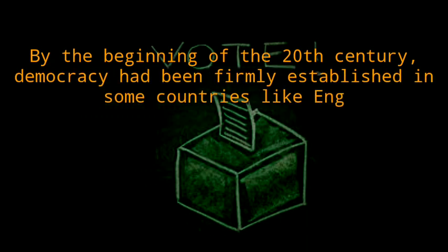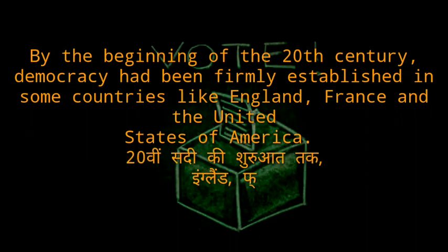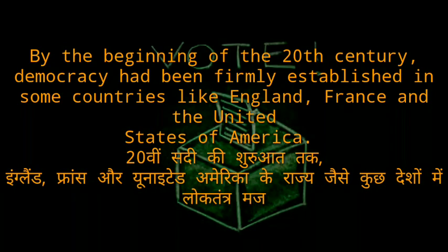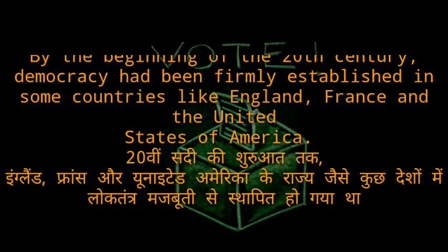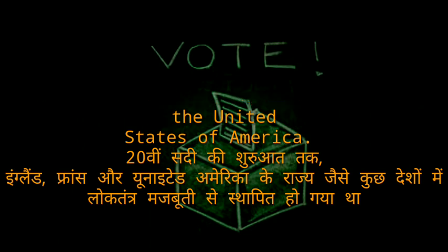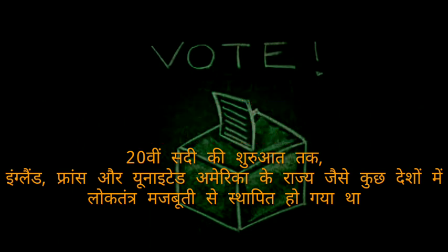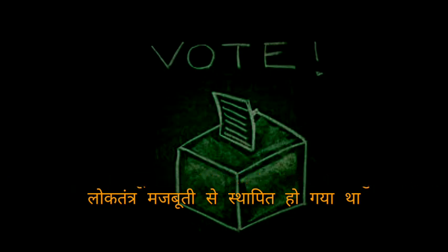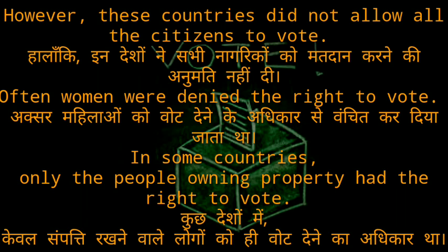By the beginning of the 20th century, democracy had been firmly established in some countries like England, France and the United States of America. However, these countries did not allow all citizens to vote. Often women were denied the right to vote.